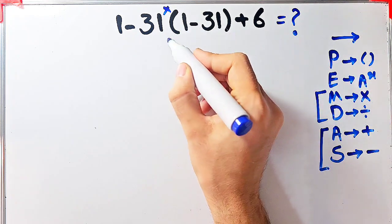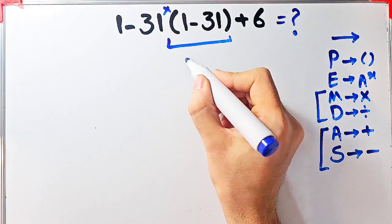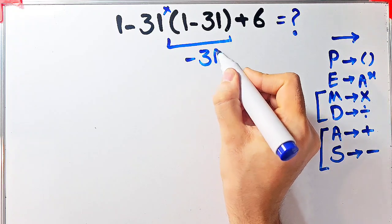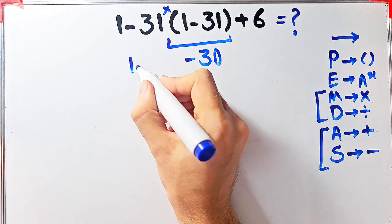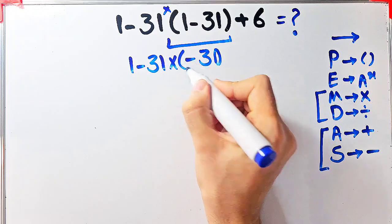According to the PEMDAS rule, first we simplify this parenthesis. 1 minus 31 equals negative 30. Now the question is 1 minus 31 times negative 30 plus 6.